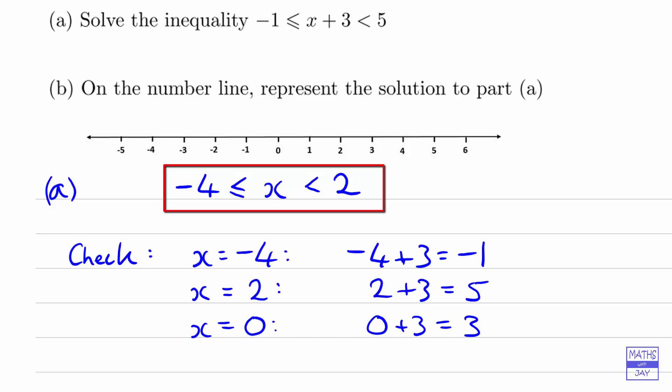So for example, if we substituted 10 for x, we would get 10+3 is 13, and 13 is certainly not in between -1 and 5, so that wouldn't work. So we've shown that we've got the right answer, and to represent the solution on the number line...